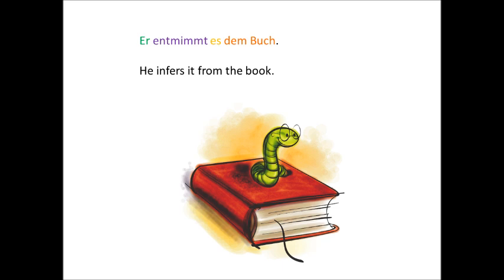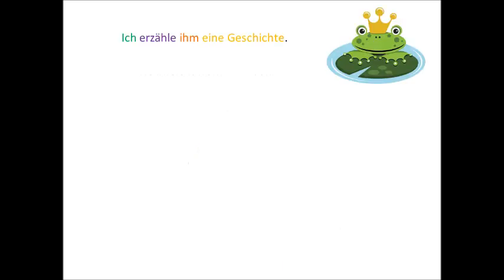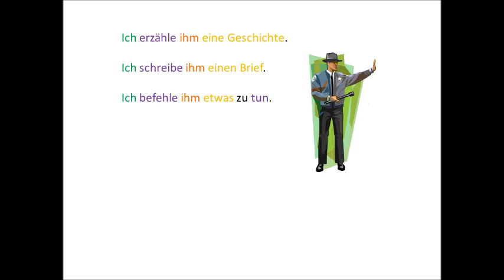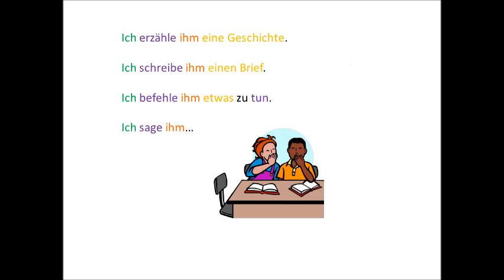Another set of verbs that take the dative in German are verbs about speaking to or communicating with someone. So, for instance, ich erzähle ihm eine Geschichte, I tell him a story. Ich schreibe ihm einen Brief, I'm writing him a letter. Ich befehle ihm etwas zu tun, I order him to do something. Ich sage ihm, I tell him.